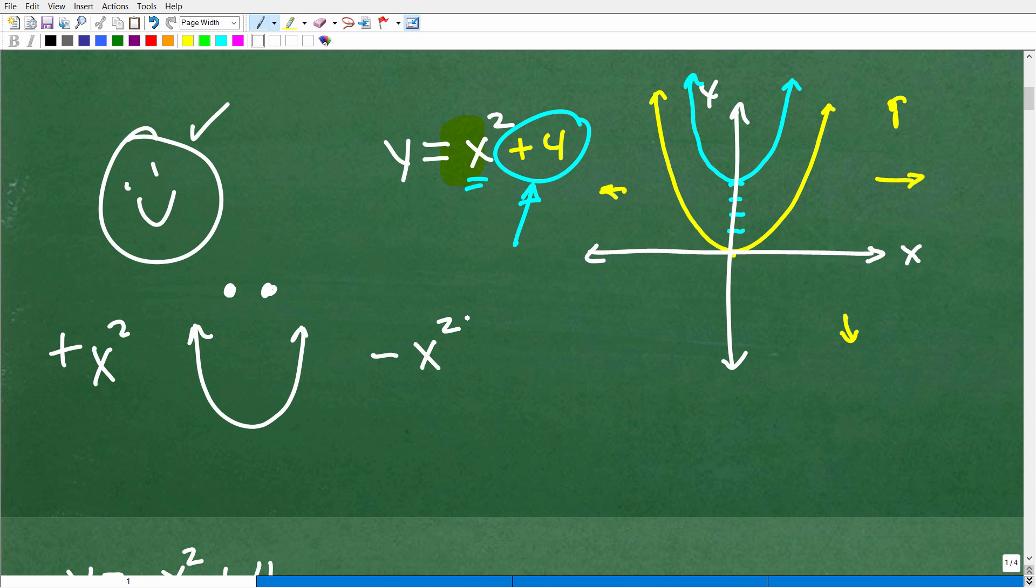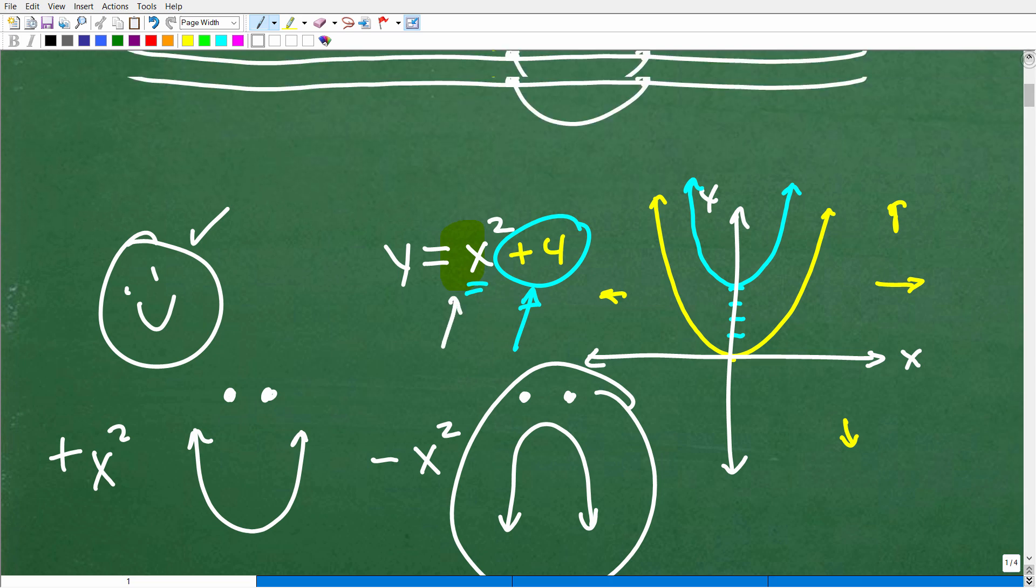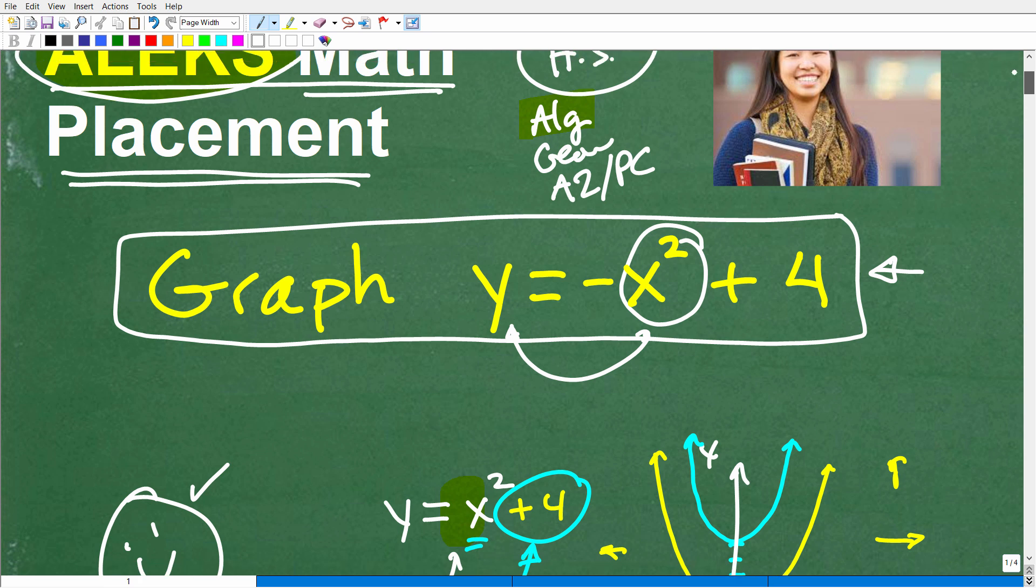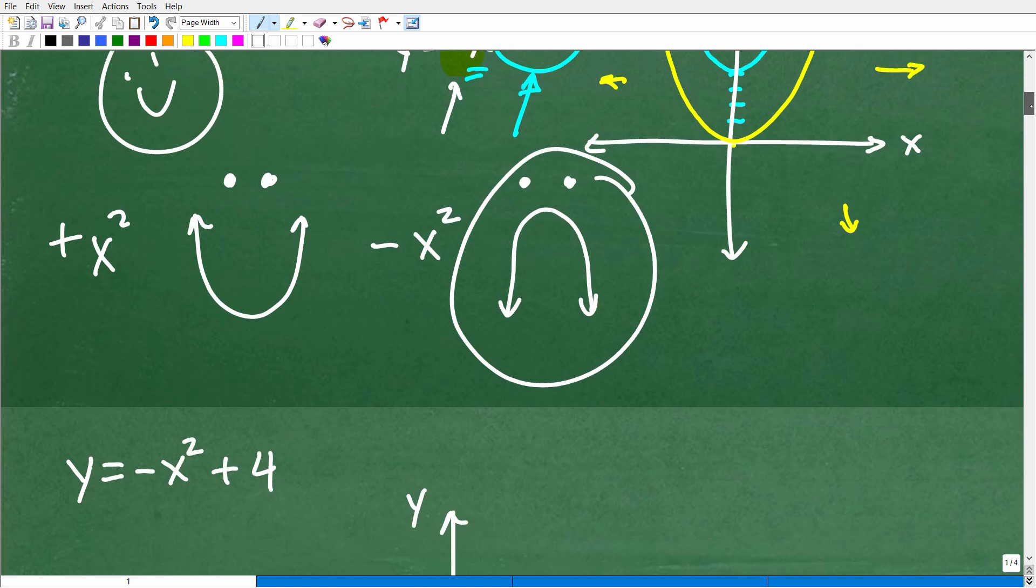When the sign in front of x squared is positive, you have a happy parabola. When it's negative, like negative x squared in our problem, what do you have? You have a parabola that would rather have been a line or ellipse or circle. That parabola is sad. This is a reflection. You're going to flip it upside down. This parabola is going to get flipped. In this problem, there's two things going on. We have a transformation. We're moving the parabola up, and then we also have to flip it.